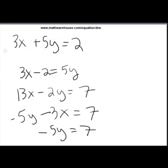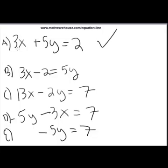Here's equation a, b, c, d, and e. Let's go through them one by one. 3x + 5y = 2 is standard form, right? We have the x and y terms on one side, the constant or number on the other.